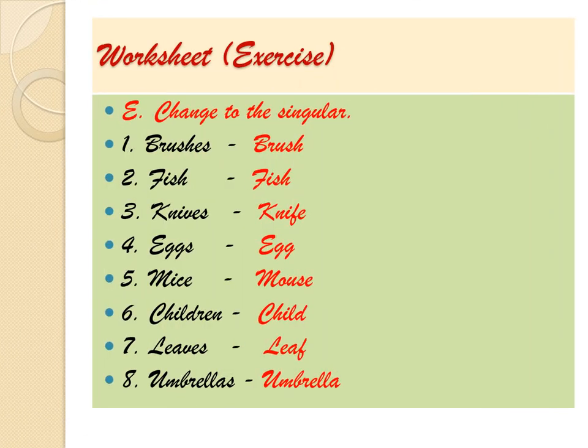Question five: change to singular. Plural forms are given and we will change them to singular. Brushes → brush, fish → fish, knives → knife, mice → mouse, children → child, leaves → leaf, umbrellas → umbrella.